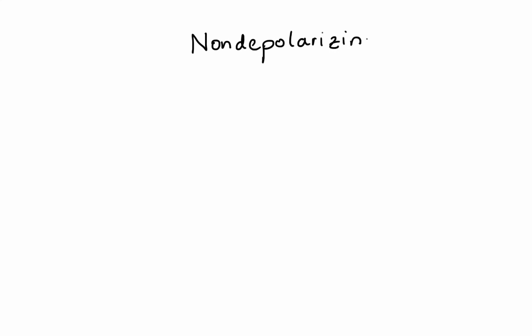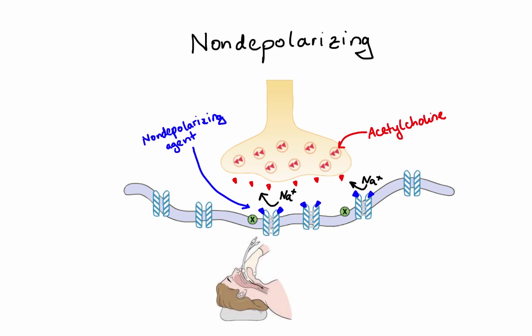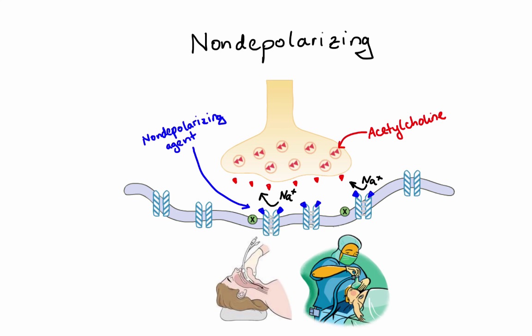Non-depolarizing agents are competitive antagonists. They bind to acetylcholine receptors but do not induce ion channel opening, which means they prevent depolarization of the muscle cell membrane and effectively inhibit muscle contraction. In clinical practice, these agents are used to facilitate mechanical ventilation and tracheal intubation, as well as to increase muscle relaxation during surgery, allowing for lower doses of general anesthetics. These agents are not absorbed from the GI tract and must be injected, usually intravenously. Time to onset of action is rapid, usually less than two minutes.